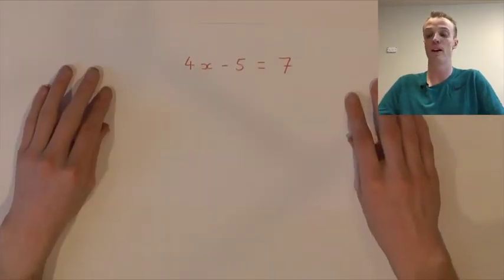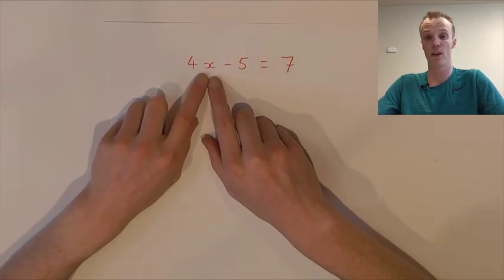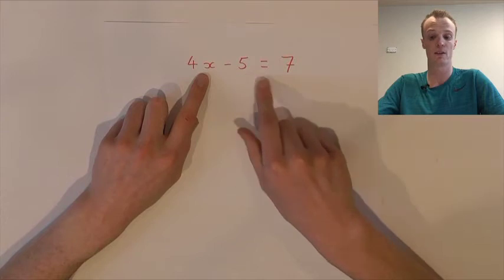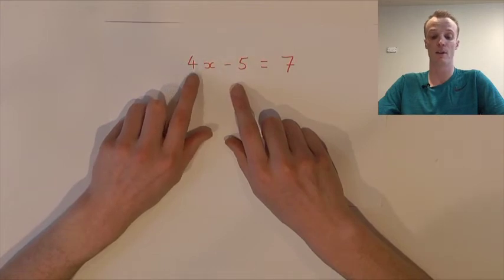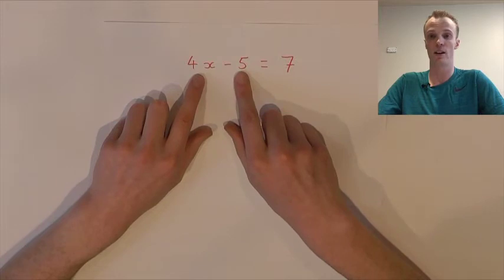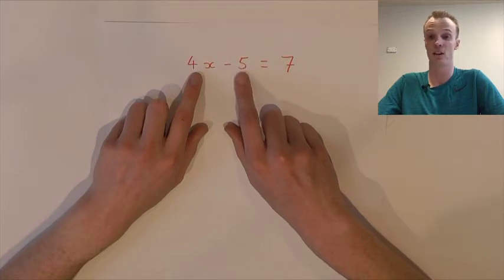Now let's look at problems that are slightly more complex and apply those four core skills. Consider the problem 4 multiplied by x, subtract 5 to that answer, equals 7. We now have a 4 multiplying and a subtraction on the left-hand side. We know we need to perform the inverse operations — dividing and addition — but I want you to pause for a moment and think about which one we need to do first and why.